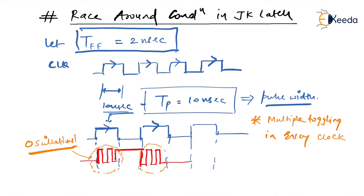We want our flip-flop or latch to toggle only once per clock. So one possible solution to eliminate race around condition involves these two figures — propagation delay is 2ns and pulse width is 10ns. What if we chose a flip-flop with a propagation delay greater than the pulse width? This is how we can overcome this problem.